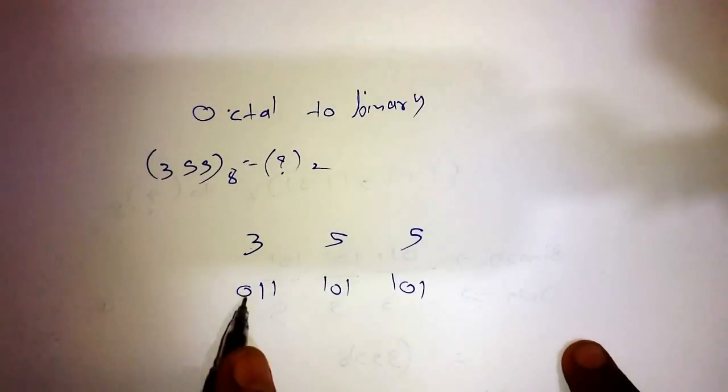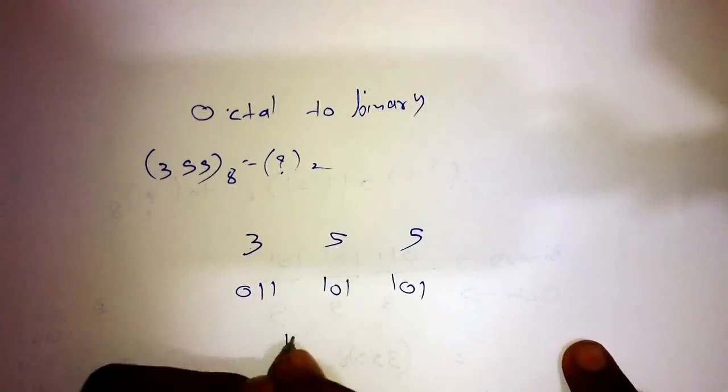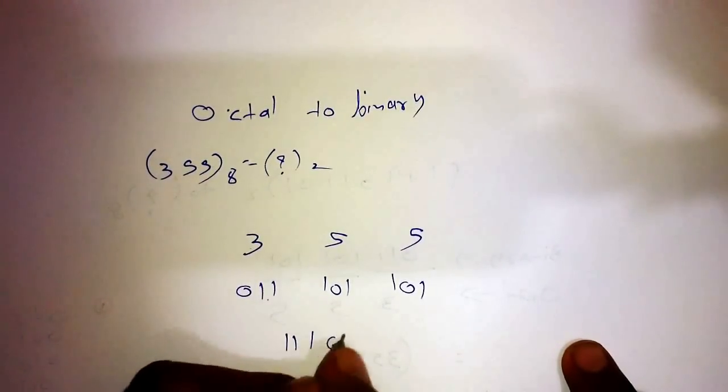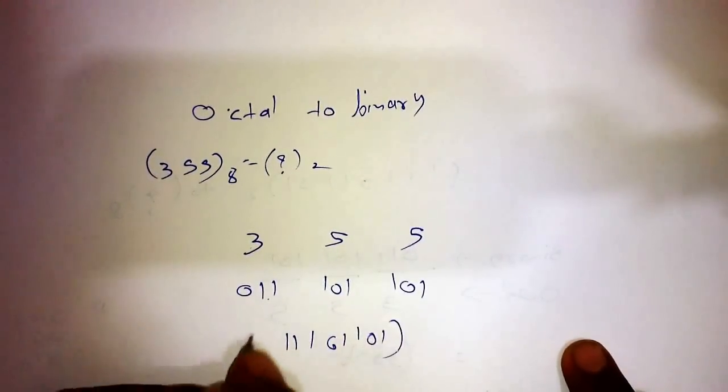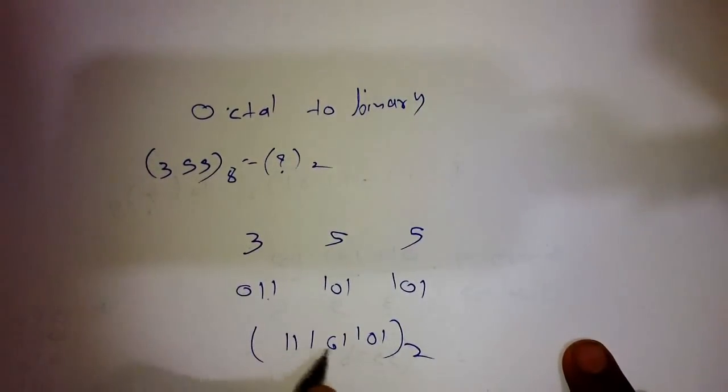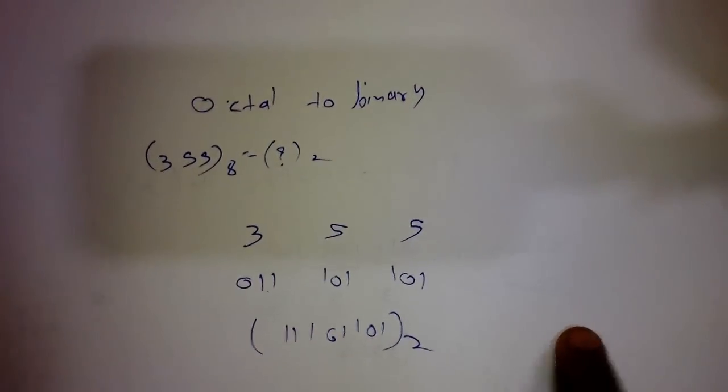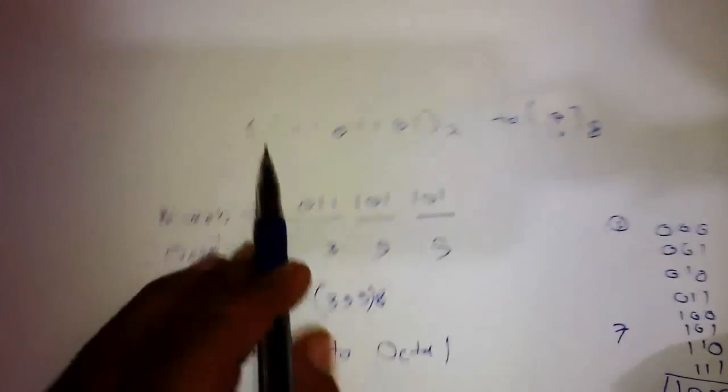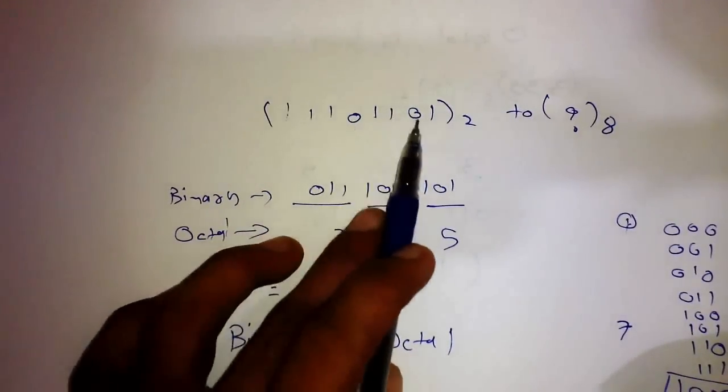If the first digit is 0, neglect it. Then the answer will be 11101101. That is 11101101.